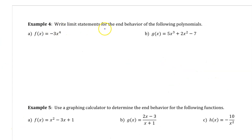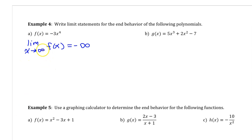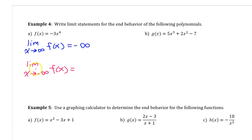Example 4: write limit statements for the end behavior of the following polynomials. Starting with the right end behavior — the leading coefficient is negative, so the right end behavior will be approaching negative infinity. The limit as x approaches infinity of f of x equals negative infinity. The degree is even, so the left end behavior will be the same: the limit as x approaches negative infinity of f of x is also negative infinity.